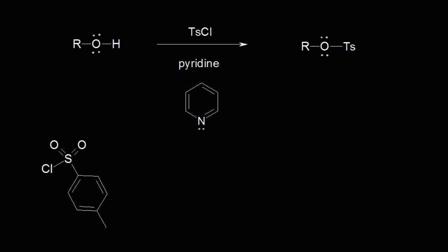You can make mesylates and tosylates from alcohols. You might want to do this because mesylates and tosylates are better leaving groups. If we look at a general reaction to form a tosylate, you would start with an alcohol, add tosyl chloride and pyridine, and you would form your tosylate over here on the right.